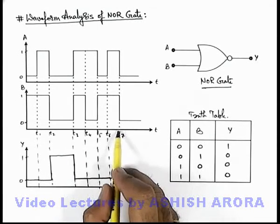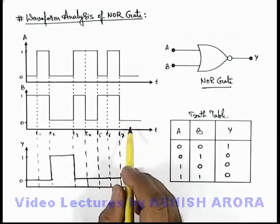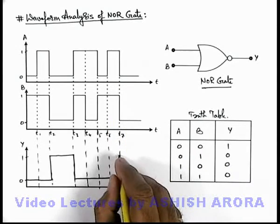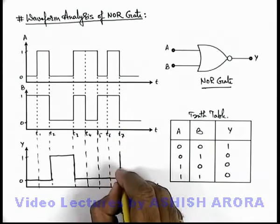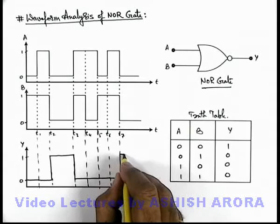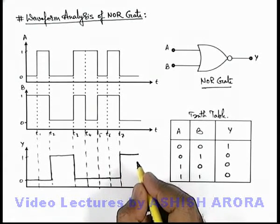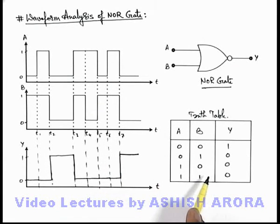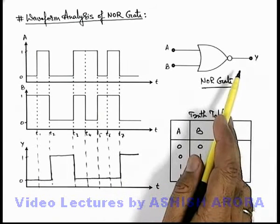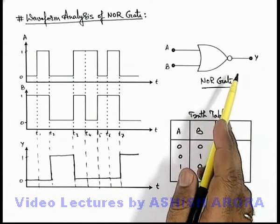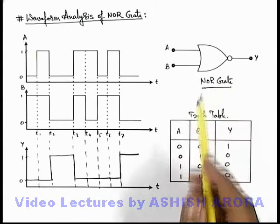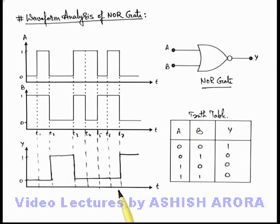From t7 onward, both signals are in the zero state, so the corresponding output at terminal Y will be high. According to this truth table we have drawn the output signal we are getting at the output terminal of the NOR gate, and this is the waveform we are getting at terminal Y.